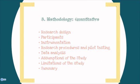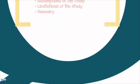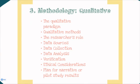The methodology section — which may be quantitative — would typically include your research design, your participants or sample, your instrumentation, research procedures and pilot testing information, and how you're going to analyze the data. The methodology section will also include the assumptions and limitations of your study, and a summary. A qualitative methodology chapter will achieve similar functions but may have different components, including discussion of the qualitative paradigm, what qualitative methods you'll be using, the researcher's role, where data comes from, how it's collected and analyzed and verified, ethical considerations of how the qualitative research was conducted, and a plan for the narrative or pilot study results.